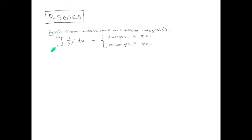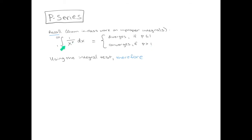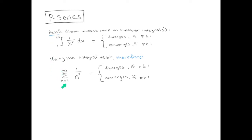If you look back at your notes, you'll see that we had an extra example at the end of class when we did improper integrals. We wrote out the different cases for P greater than 1, P less than 1, and P equal to 1. What we found is that the integral diverges if P is less than or equal to 1 and converges if P is greater than 1. Now that's an integral, but using the integral test, we take the X and turn it into an N, and the summation from N equals 1 to infinity diverges or converges according to the same constraints on the P value.